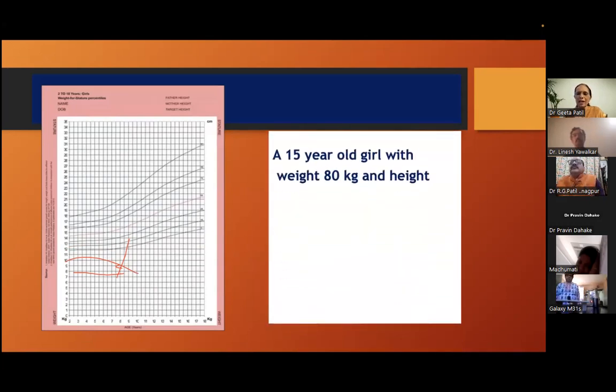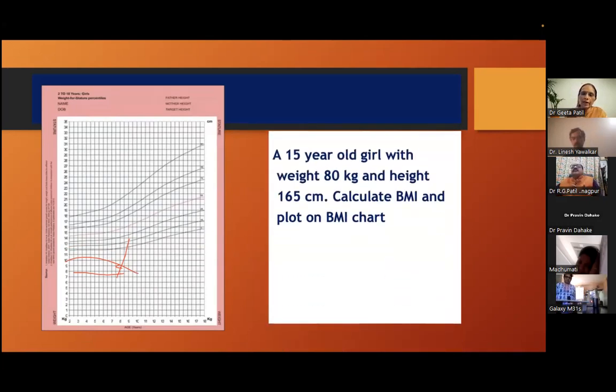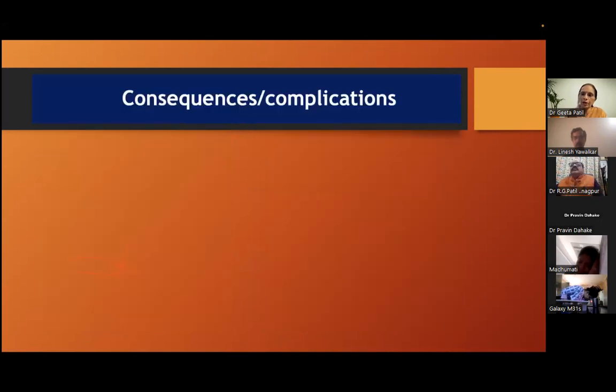IAP pediatrician-friendly growth charts are available — they reduce our work; we don't need to go through apps or formulas. By plotting on the chart you can tell if a patient is overweight or obese. For example: a 15-year-old girl weighing 80 kg and height 165 cm has BMI 29.1 — definitely obese.